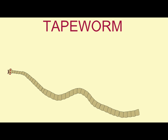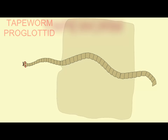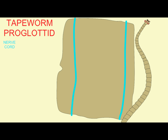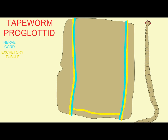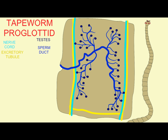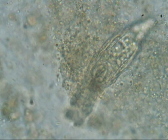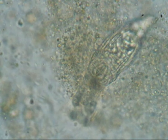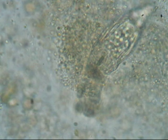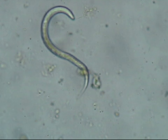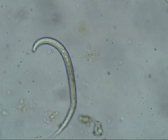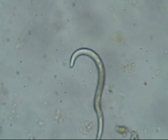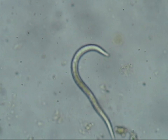Tapeworms are intestinal parasites which have a series of hermaphroditic segments known as proglottids. Rotifers are microscopic filter feeders. Nematodes are extremely important — you should be able to match them to their features, such as that they are one of the most abundant groups of organisms on the planet.